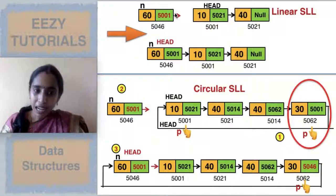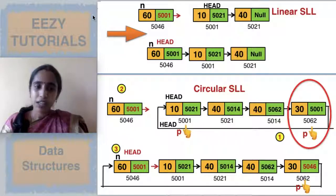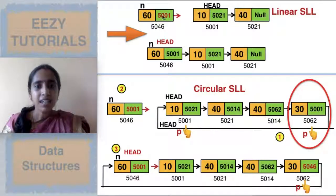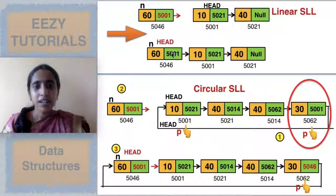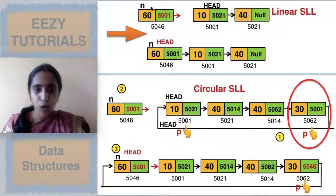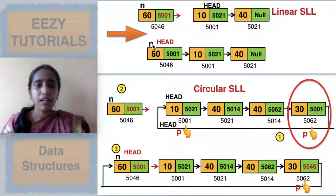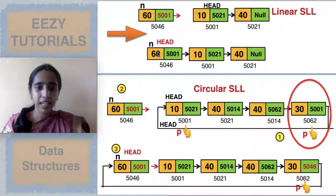In a linear linked list, how will you insert a new node at the beginning? First you will create a new node named n. The new node's next part you will write with the head's address, then a connection will be made. So the head will become the second node and the new node will become the first node. Since head should always point to the first node, we will make n the head. These are the two tasks you do after creating the new node in a singly linear linked list.